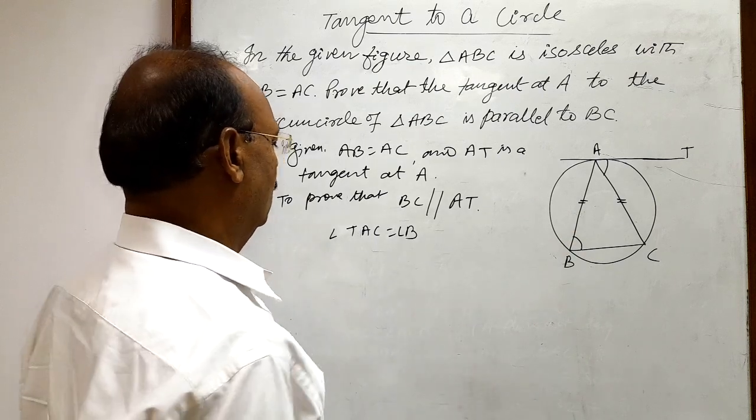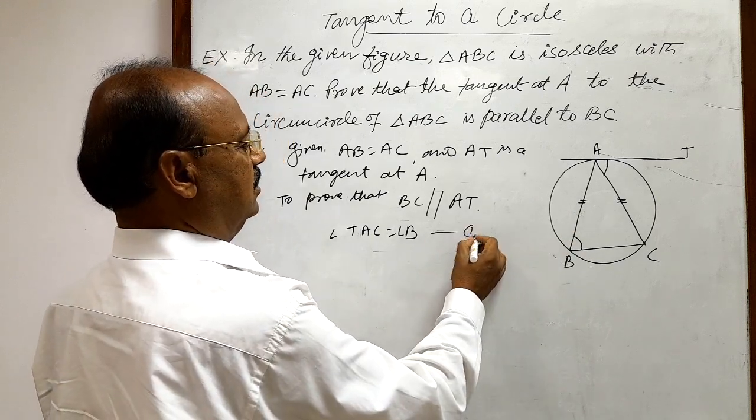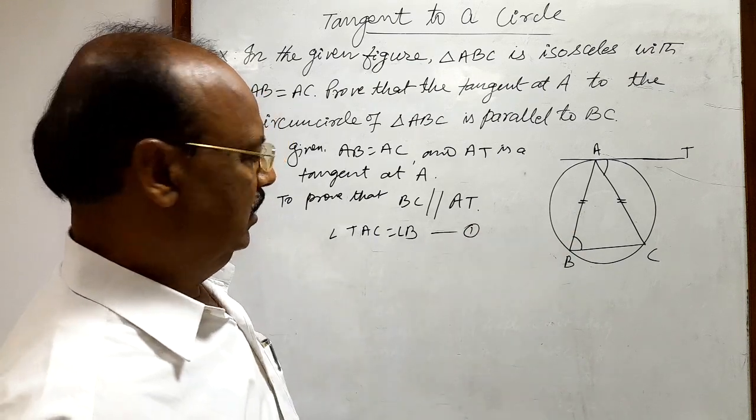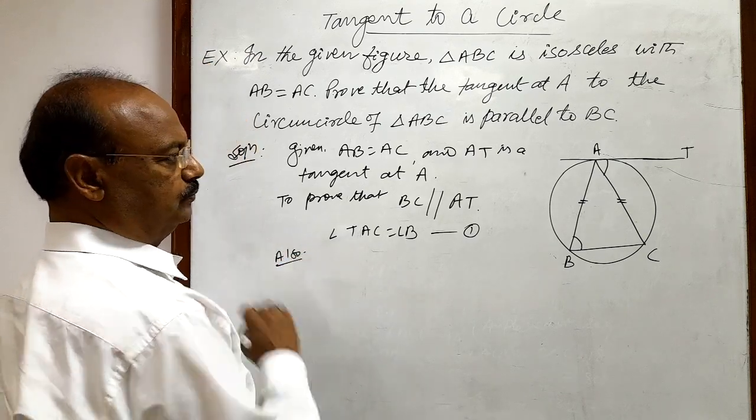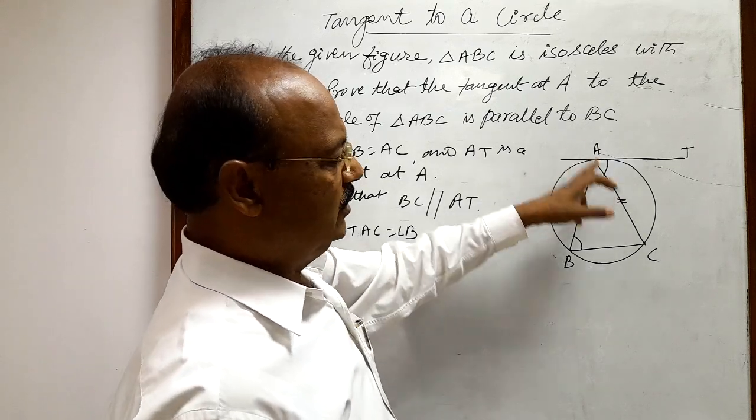Correct. Suppose this is relation 1. Now, also, since AB is equal to AC,